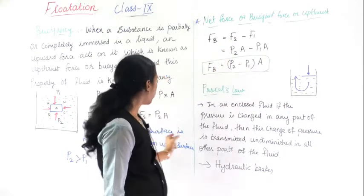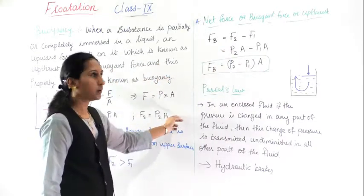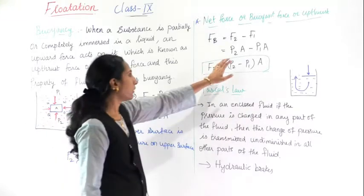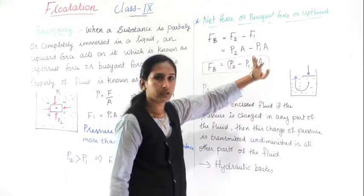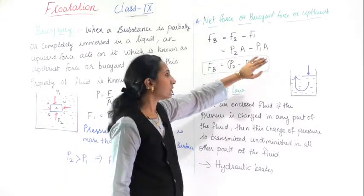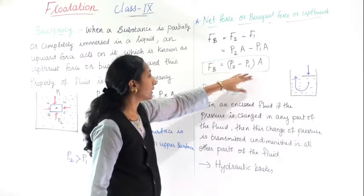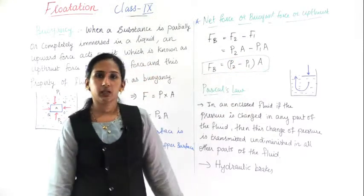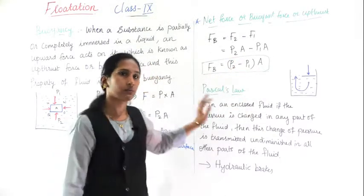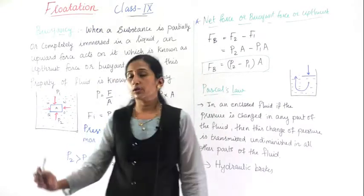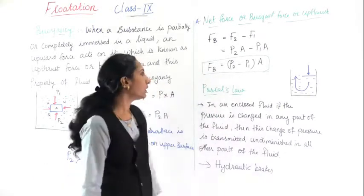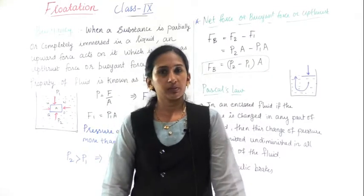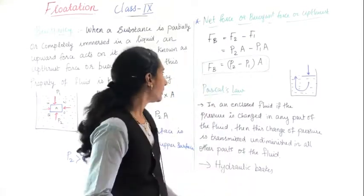Buoyant force equals F2 minus F1. Substituting: F2 equals P2 times A, and F1 equals P1 times A. Since area A is constant on both sides, we take it outside the bracket: Buoyant force equals (P2 minus P1) times A. This is the equation for the net buoyant force.